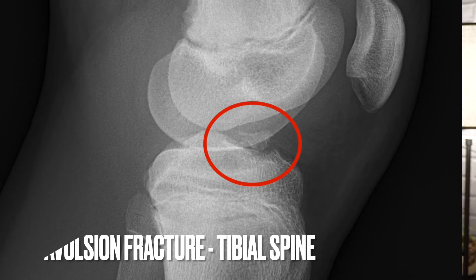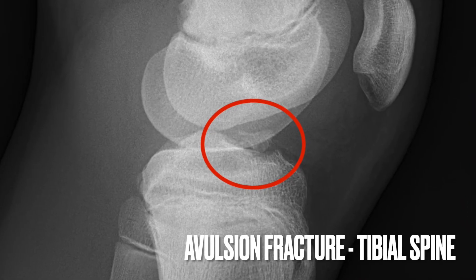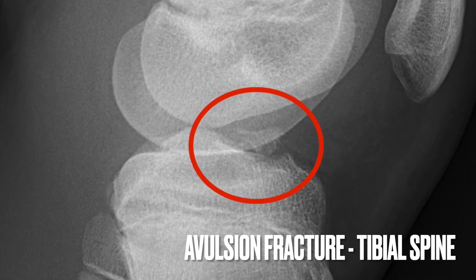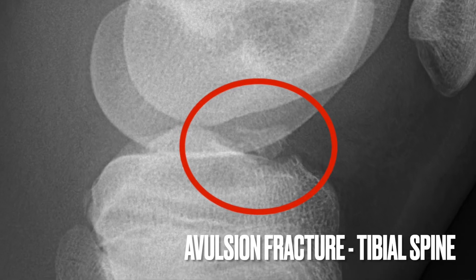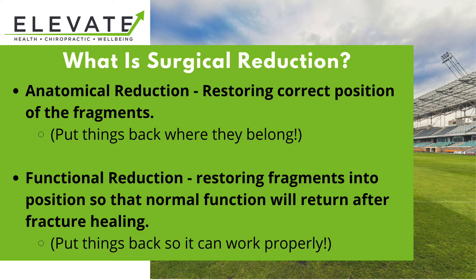Younger athletes can have an avulsion fracture from the tibial spine, which can generally be seen on x-rays. This type of injury is important to identify as it needs early reduction. In this setting where the bone is the issue, ACL reconstruction isn't needed — we just need to reduce and reattach that bone fragment.